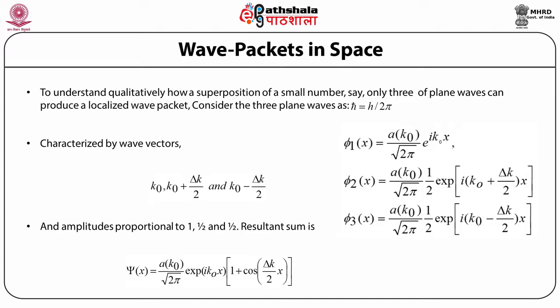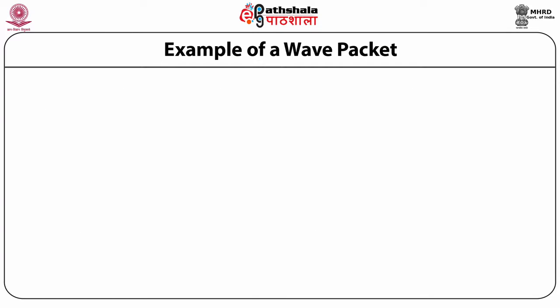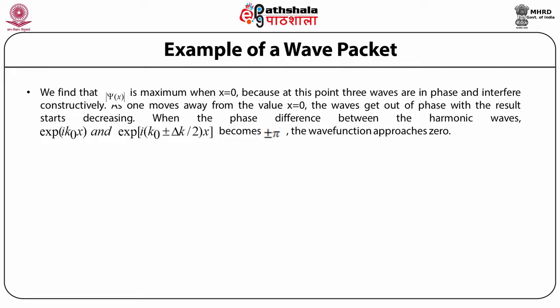The superposition of these three waves gives the resultant wave function psi(x) = a(k0) / sqrt(2pi) × exp(i k0 x) × (1 + cos(delta_k/2 · x)), which is an example of a wave packet. The wave function psi(x) associated with this wave packet has a maximum at x = 0 for its amplitude.